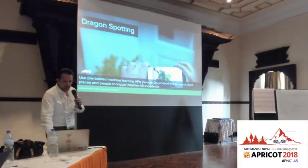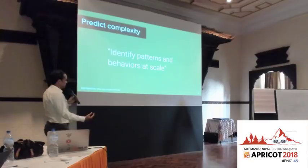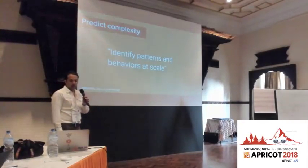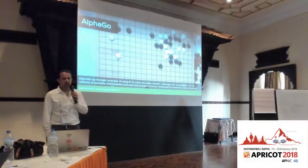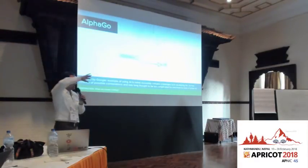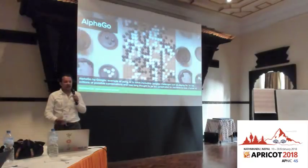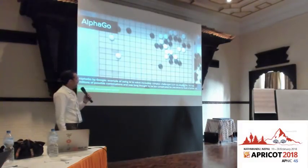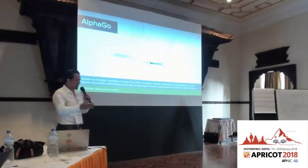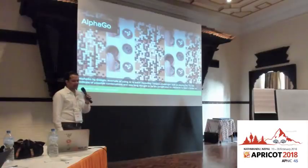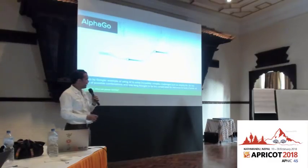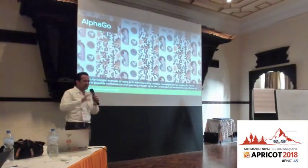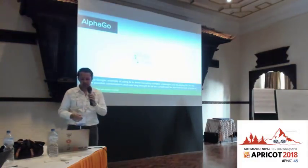Next up is predicting complexity — identifying patterns and behaviors at scale. How many of you play Go? We've now beaten the world champion at Go with AlphaGo. It was previously thought impossible for a computer due to the exponential possibilities of play moves. AlphaGo, developed by DeepMind — which is owned by Google — has made a system that can make a very good educated guess on the next best move, even without a complete overview of the whole system. There's a documentary online that goes into the details.